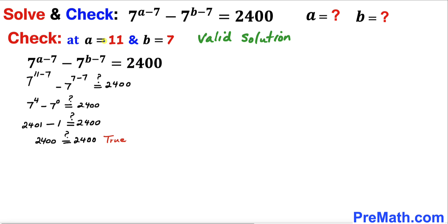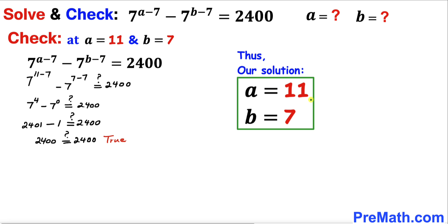Therefore a equals 11 and b equals 7 are our valid values, and our solution is confirmed. Thanks for watching and please don't forget to subscribe to my channel for more exciting videos.